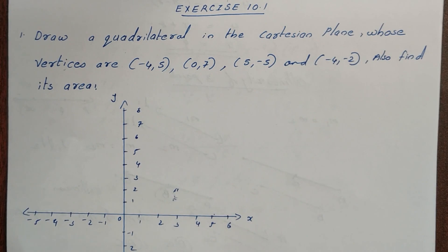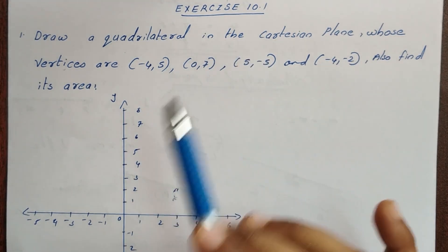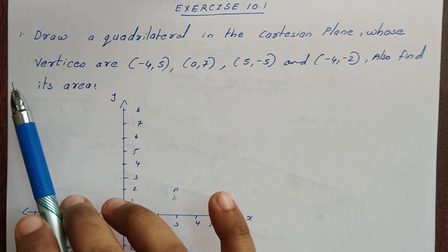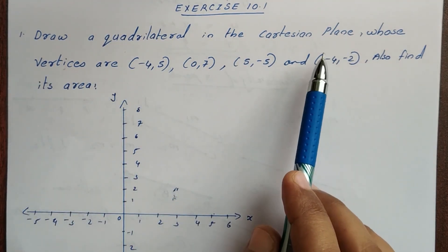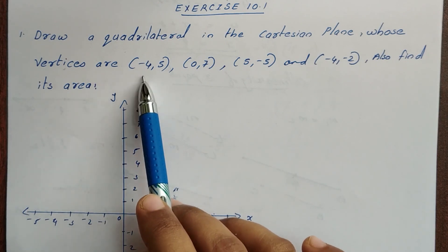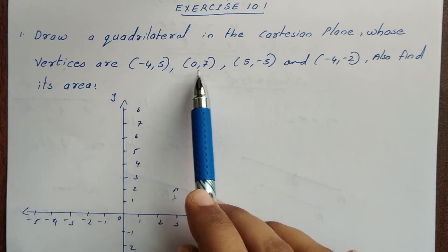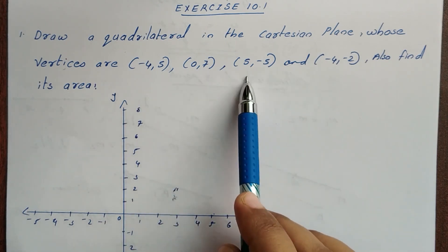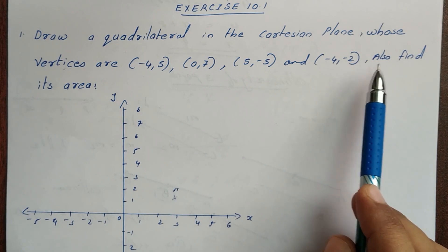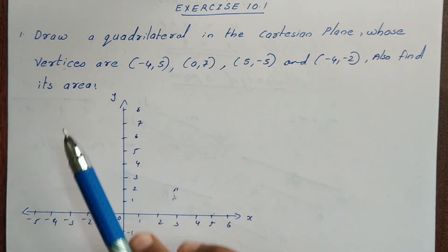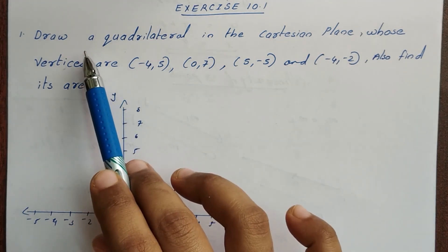Hi friends, we are going to discuss the problem with you. Exercise 10.1, first question: draw a quadrilateral in the Cartesian plane whose vertices are minus four five, zero seven, five minus five and minus four minus two. Also find its area.